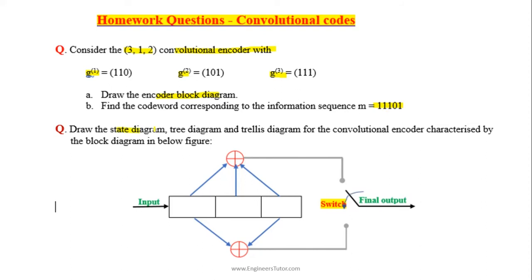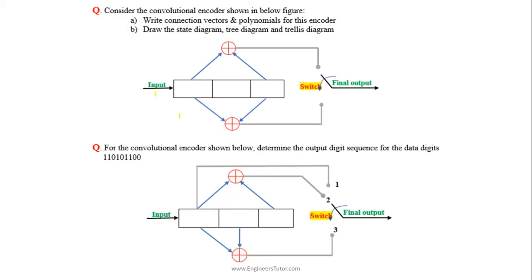Draw the state diagram and trellis diagram for the diagram shown here. Here, find the generator polynomials of this encoder, the state diagram, and the trellis diagram. Determine the output sequence for the encoder shown.